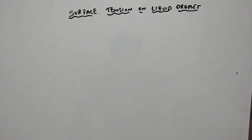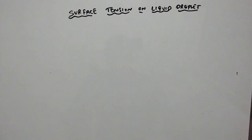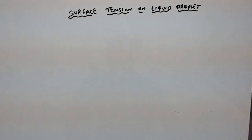In this video I am going to discuss about surface tension on a liquid droplet. Consider a spherical droplet of liquid whose radius is small r. The surface tension acts at the interface of air and the surface of the water. That is why if you observe a liquid droplet from rainwater, the shape of the droplet is spherical.